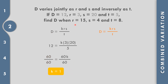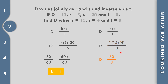Find d when r equals 15, s equals 4, and t equals 8, with k equals 1. Substituting: d equals 1 times 15 times 4 over 8, which gives 60 over 8. Simplifying to lowest terms by dividing by 4: 60 divided by 4 is 15, and 8 divided by 4 is 2. So d equals 15 over 2.